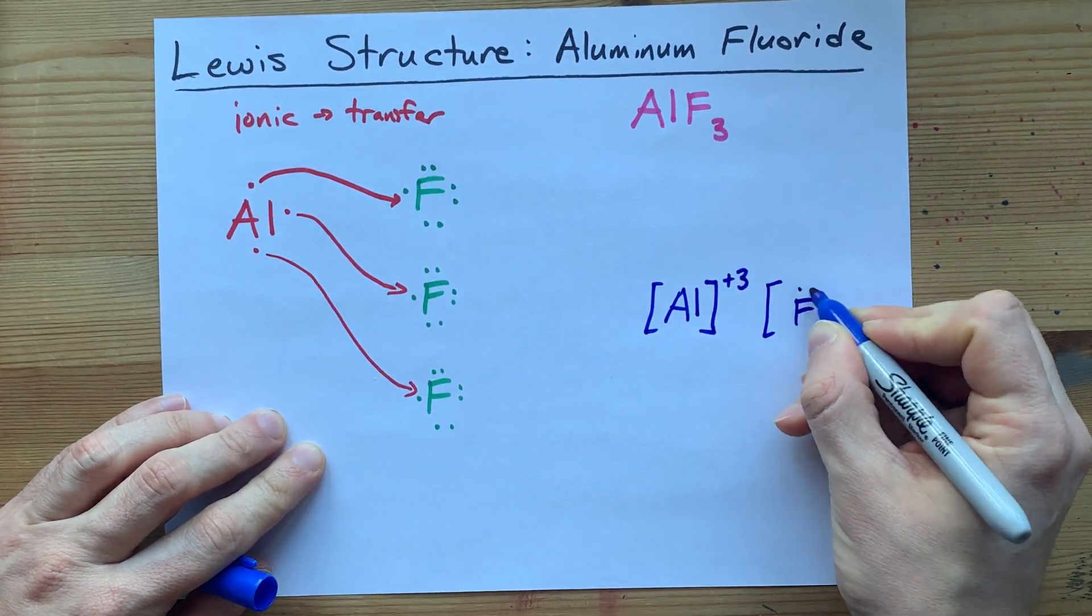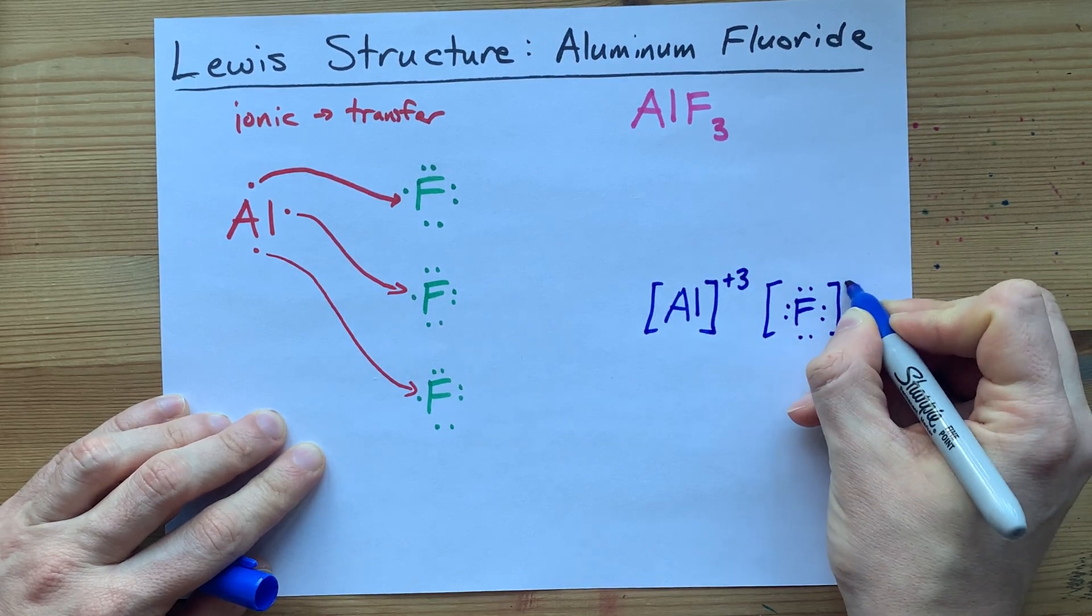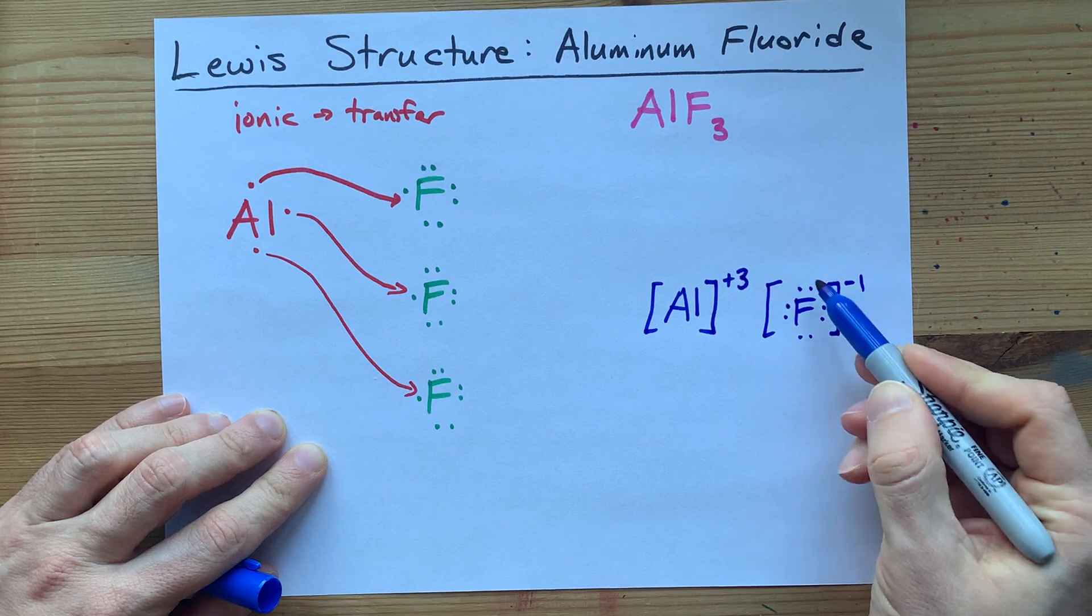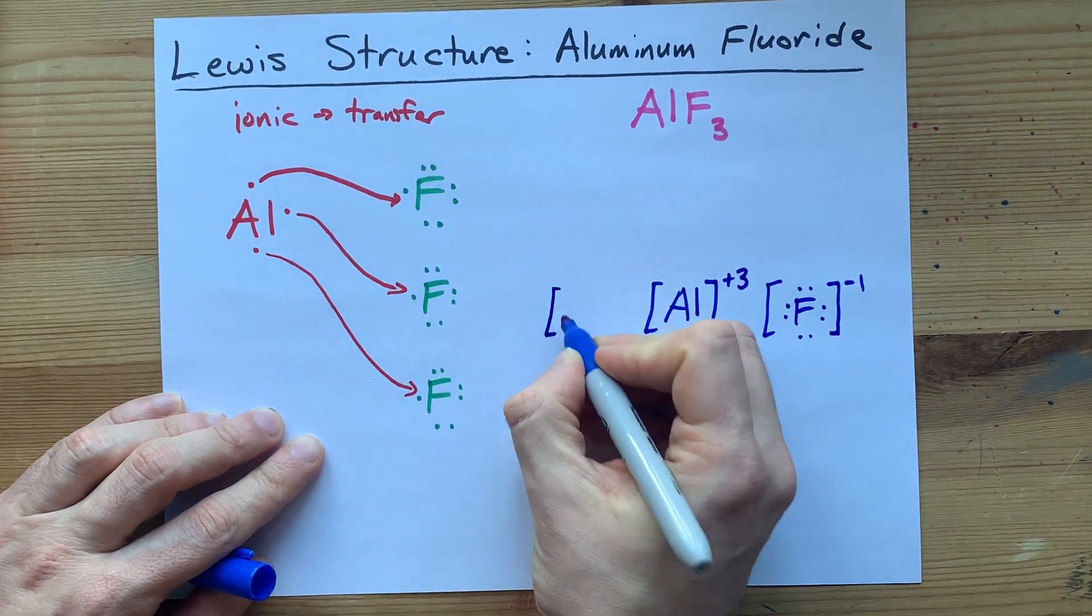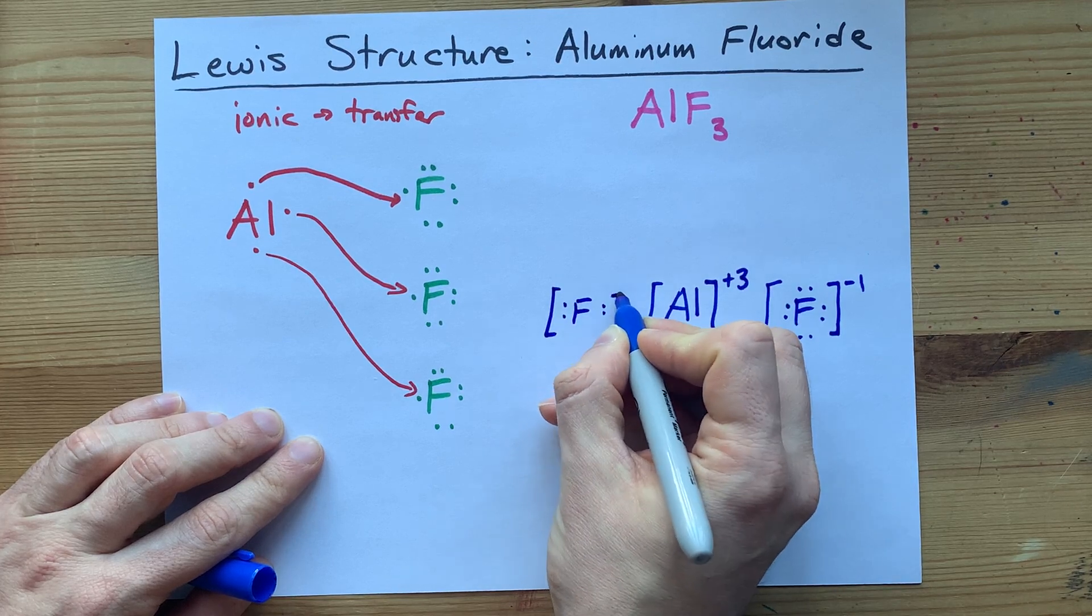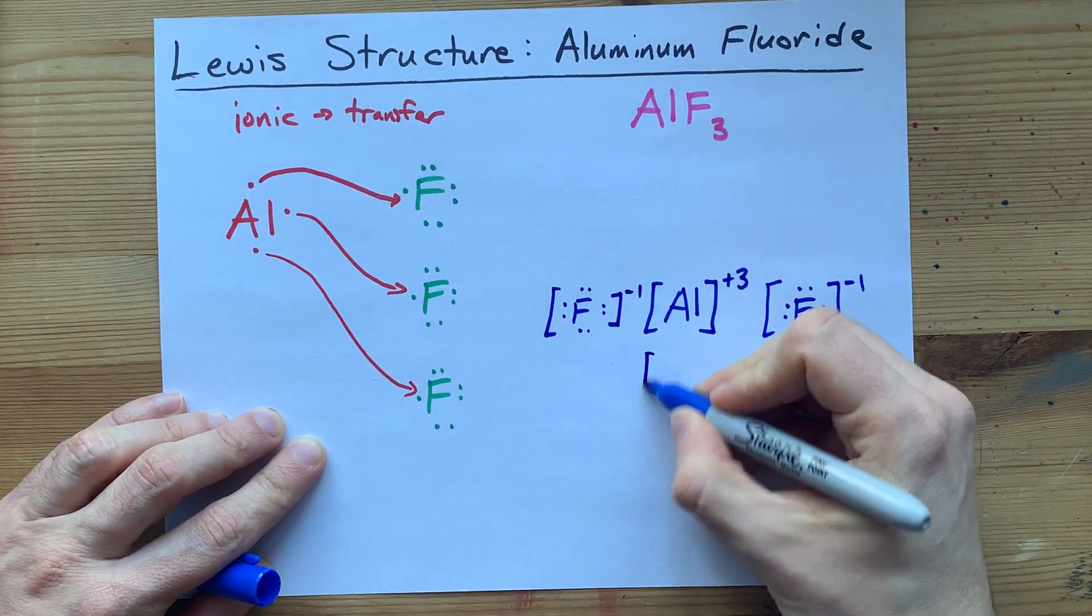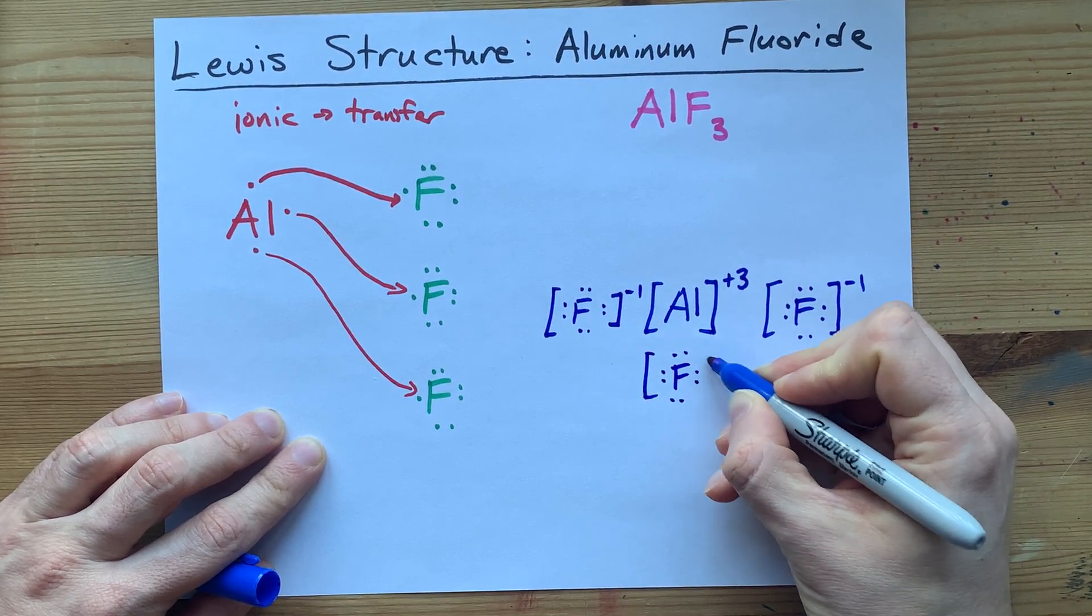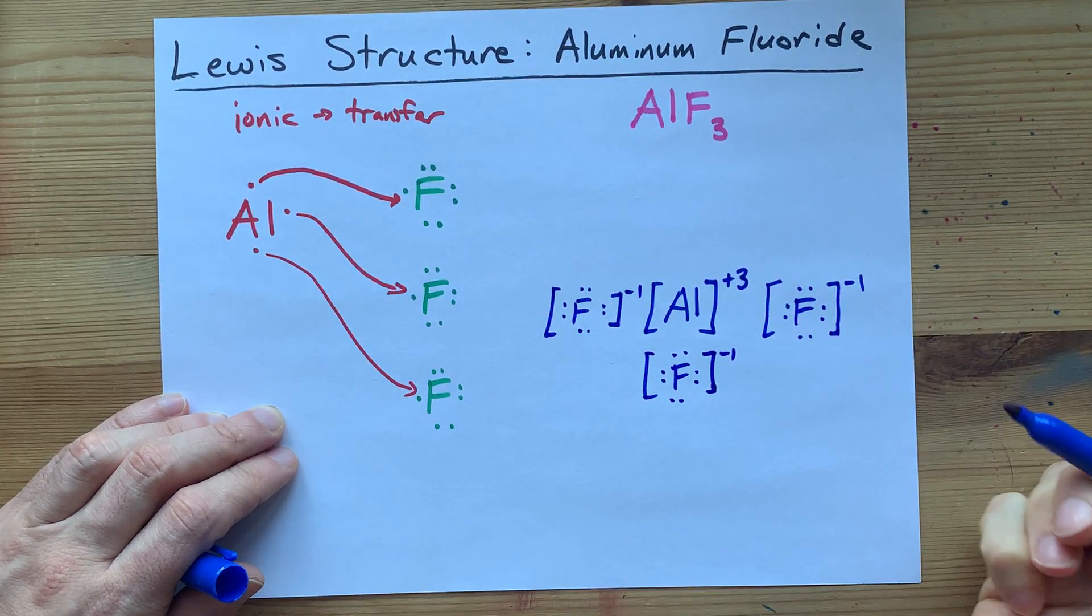Then I surround it with my three fluorines. The fluorines have eight electrons total—seven that they brought plus one from the aluminum—and that extra electron gives it a charge of minus one each. There are three of them, so it's just going to take me a second to copy these out. I like distributing them so you don't have any minus charges that are right beside each other. They all look like they're clustered around a common plus there.